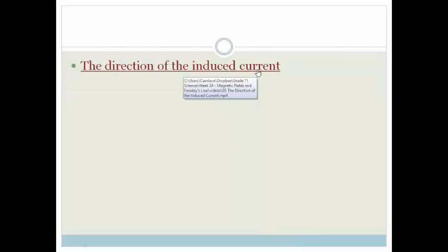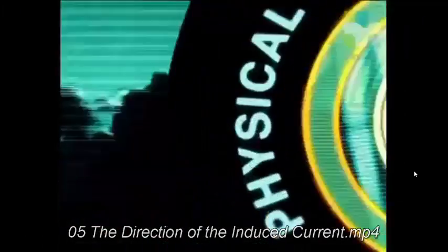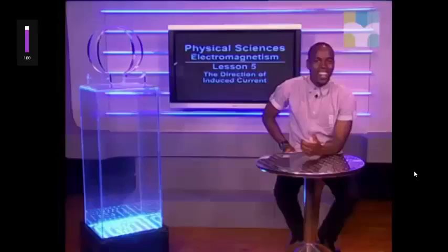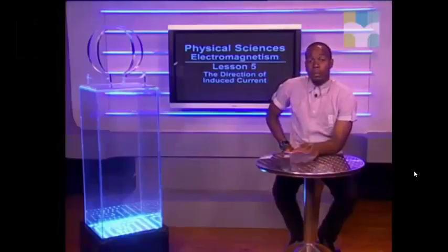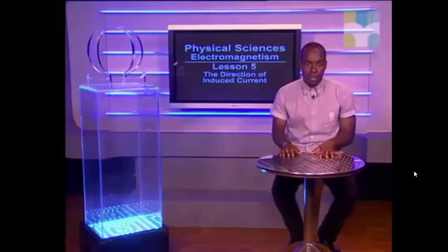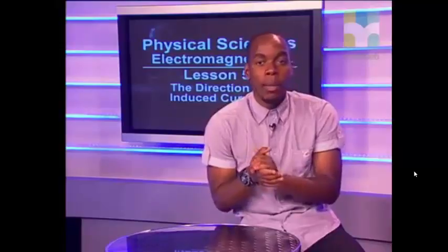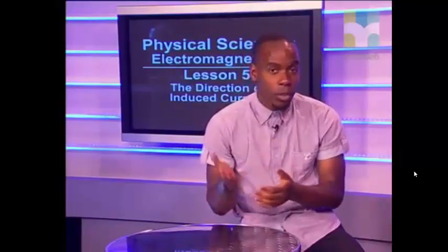In this lesson, we're going to be looking at the direction of the induced current. We will need to know what that direction is, and we're going to join the Mindset Learn team as they help us learn how to do this. Today we will find out more about the direction of the induced current and how to predict this direction. We previously induced current in a solenoid by making use of a moving magnet. To understand the direction of the induced current, we need to examine the work done by Emile Lenz.